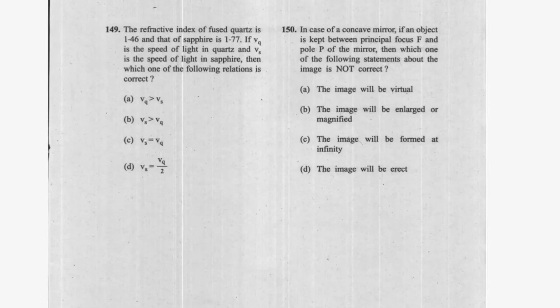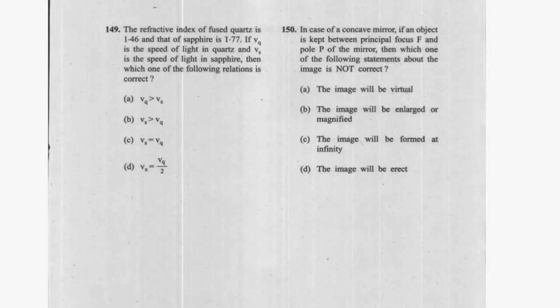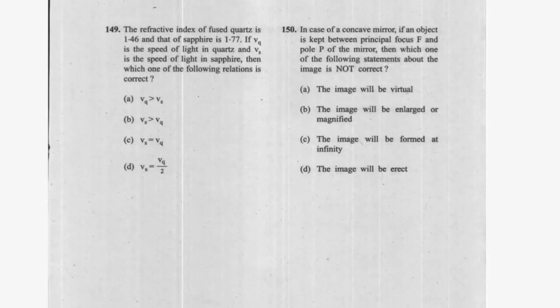Question 139: The refractive index of fused quartz is 1.46 and that of sapphire is 1.77. VQ is the speed of light in quartz and VH is the speed of light in sapphire — the correct relation is VQ greater than VH, since higher refractive index means lower speed. Question 140: In case of a concave mirror, if an object is kept between the principal focus F and the pole of the mirror, the image will not form at infinity — option C is incorrect; all other statements are correct.